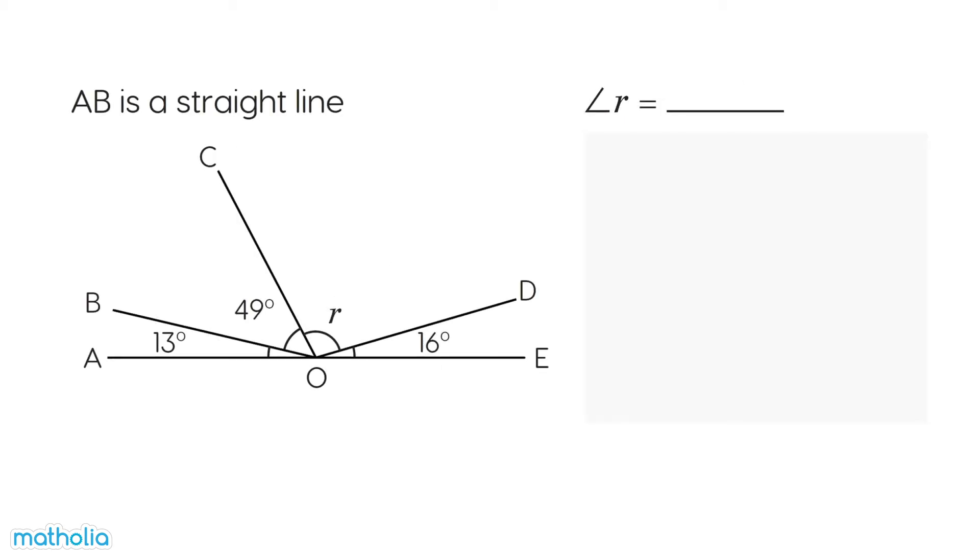Let's find the unknown angle. We need to find angle R. Angle R is equal to 180 degrees minus angle AOB minus angle BOC minus angle DOE.